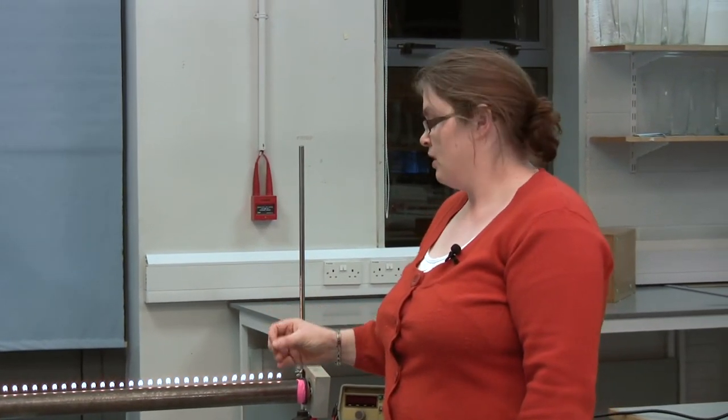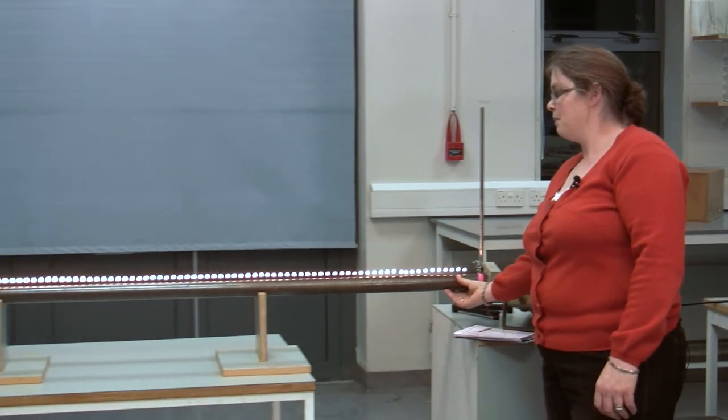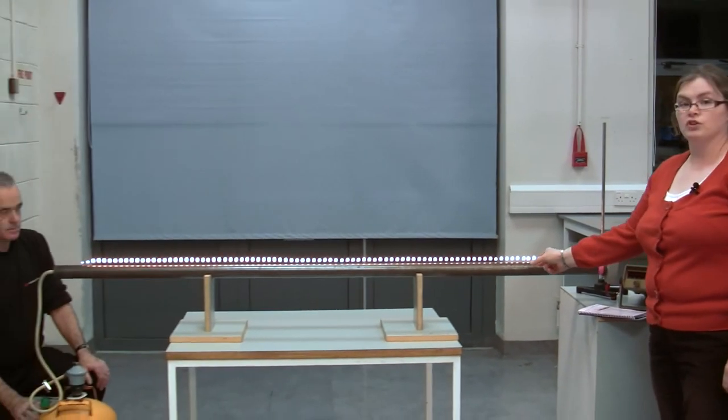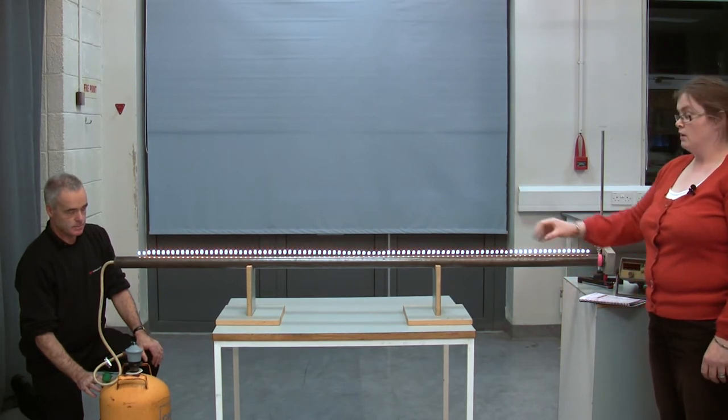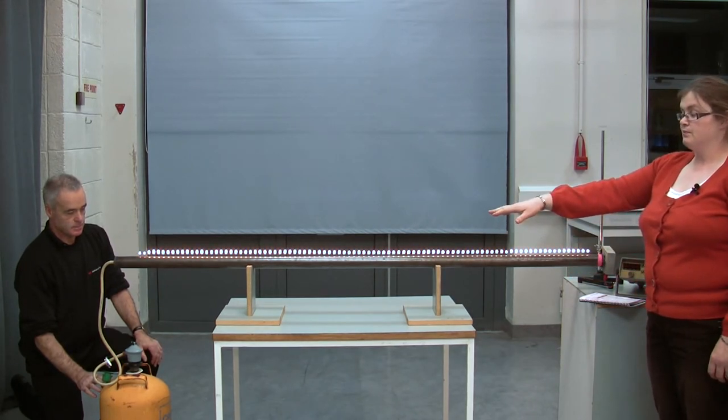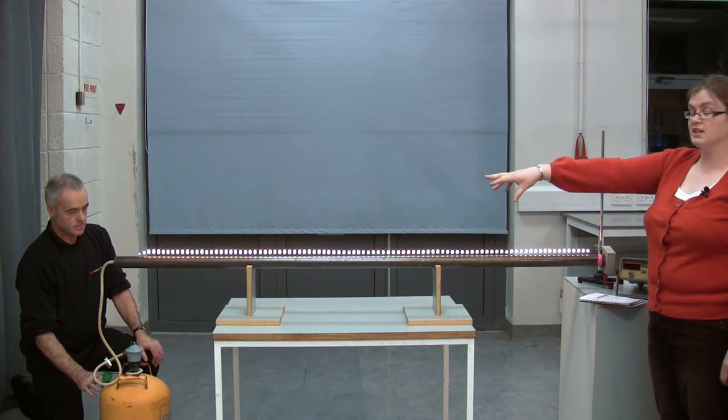This is a very interesting example of how to demonstrate standing waves in a very visual way. If we get a piece of iron pipe, what we've done is we've cut a hundred little holes all the way along the top. Connect one end to a gas cylinder and a sealed cap.